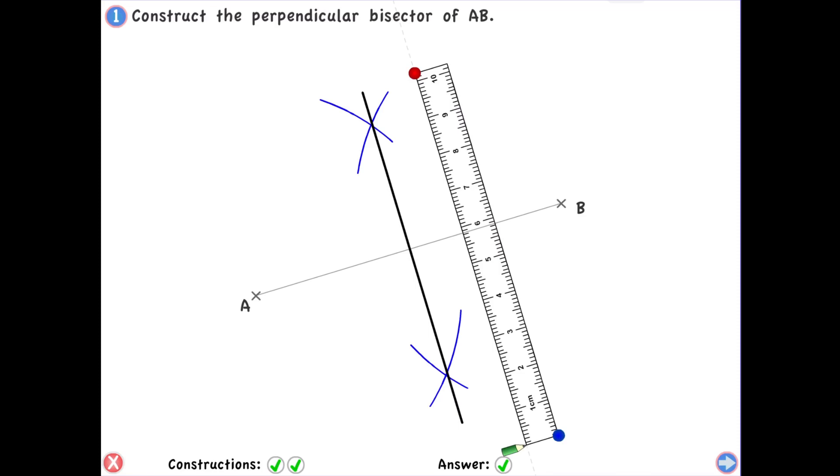So this is how you construct a perpendicular bisector of any two given points. That's all for this video. I'll see you guys in the next video. Until then take care. Bye-bye.